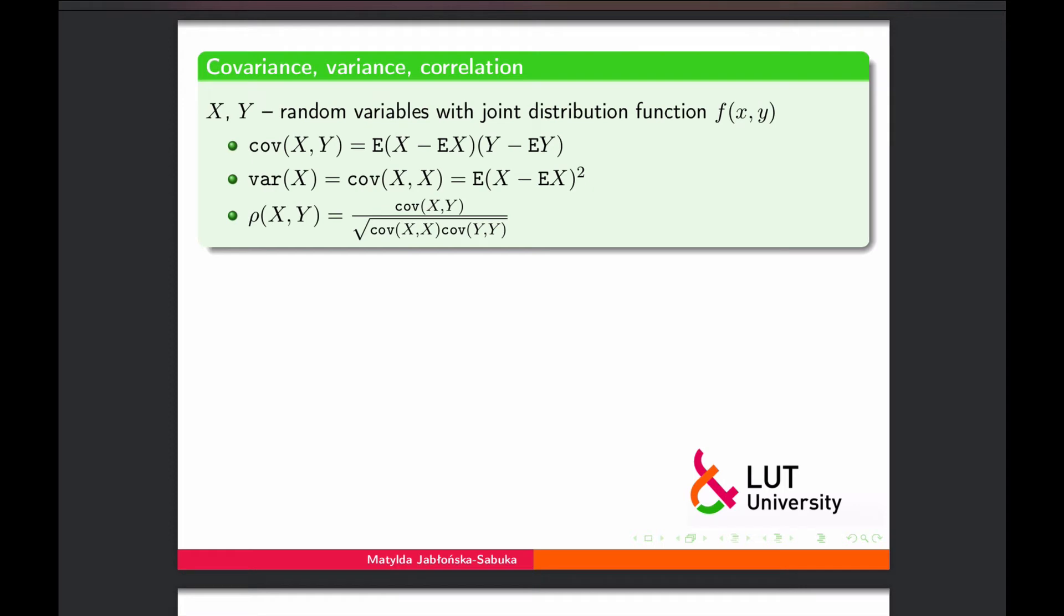So if we think of X and Y as two random variables with joint distribution function f(x, y), then covariance of two variables can be calculated as expectation of multiplication of the differences of each variable with its own expectation. Now if in that covariance we don't have two different variables but rather the same variable, then we land at variance and that basically simplifies the formula to this. And then correlation coefficient between the two random variables basically means their covariance rescaled by their standard deviations. Because this one is a covariance of X and this one is variance of Y, and square root of those creates multiplied standard deviations.